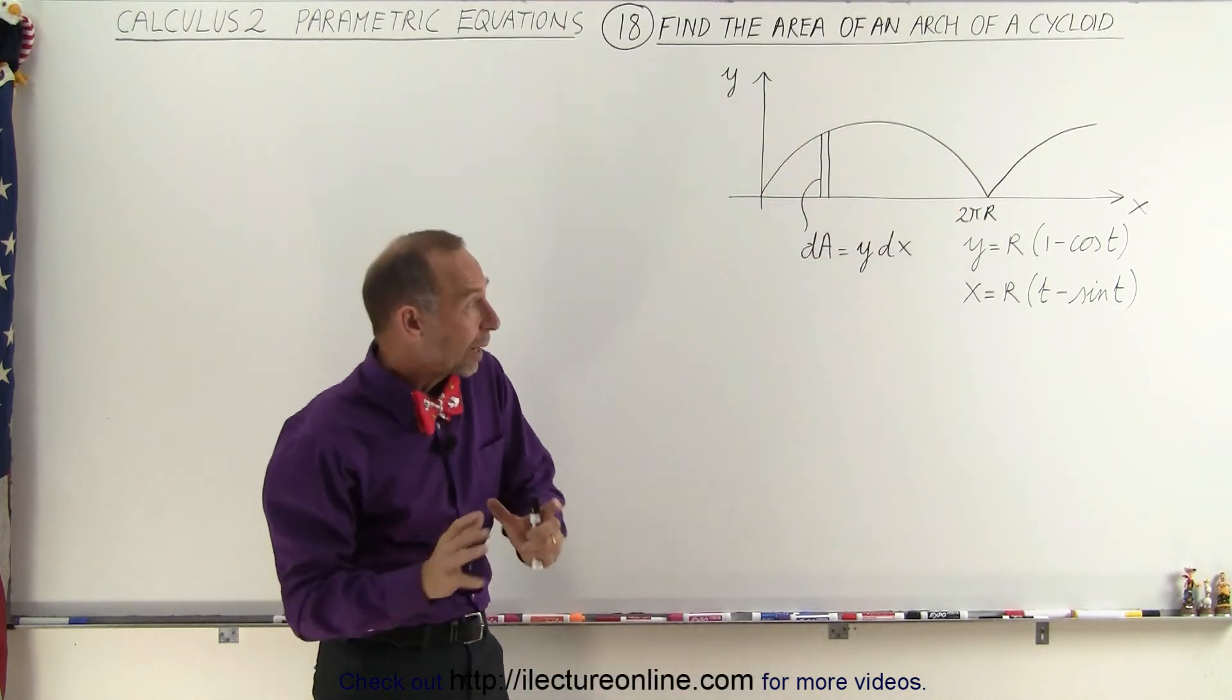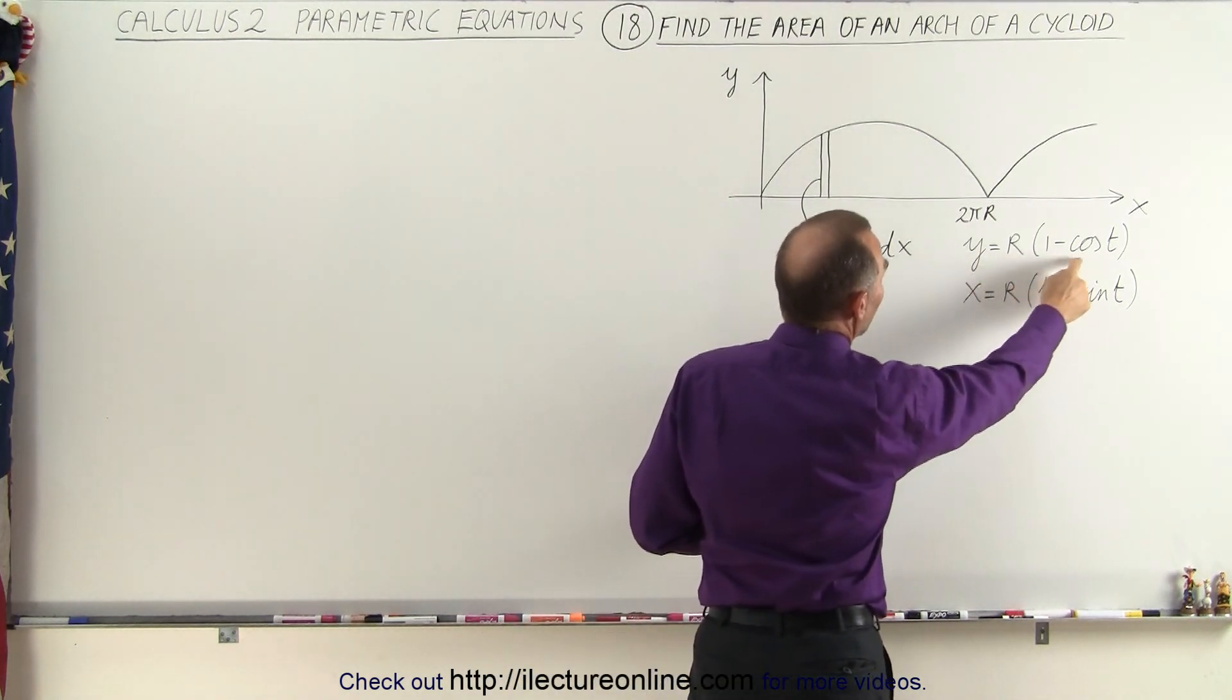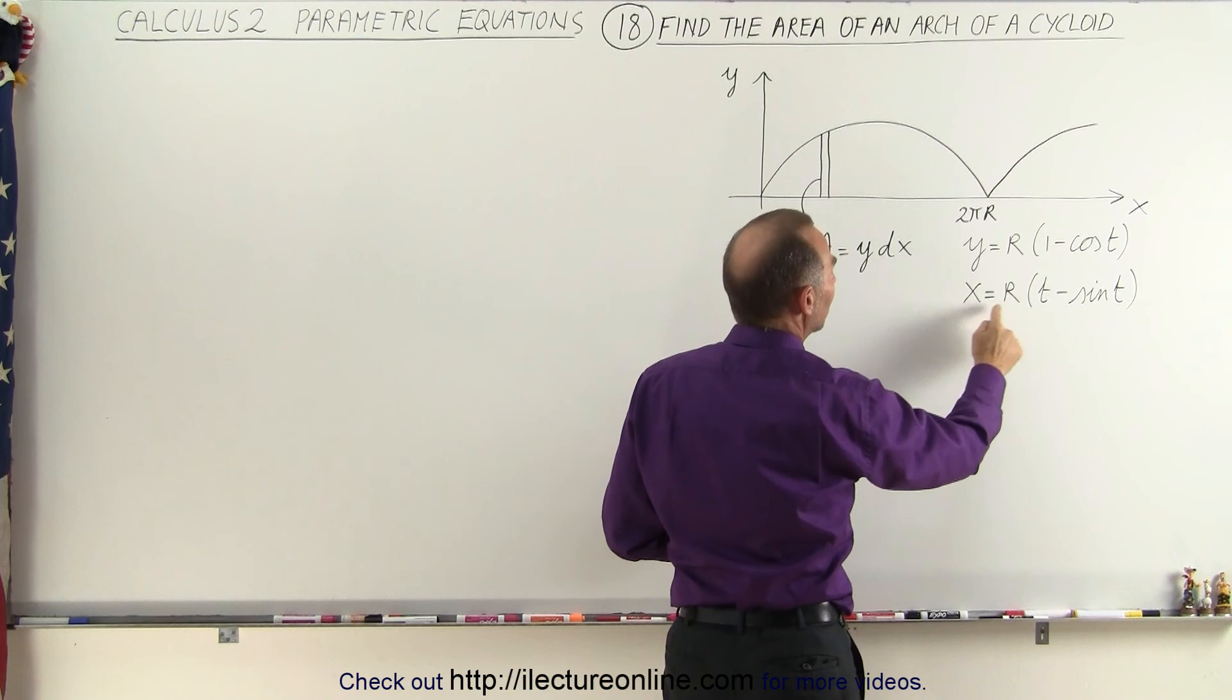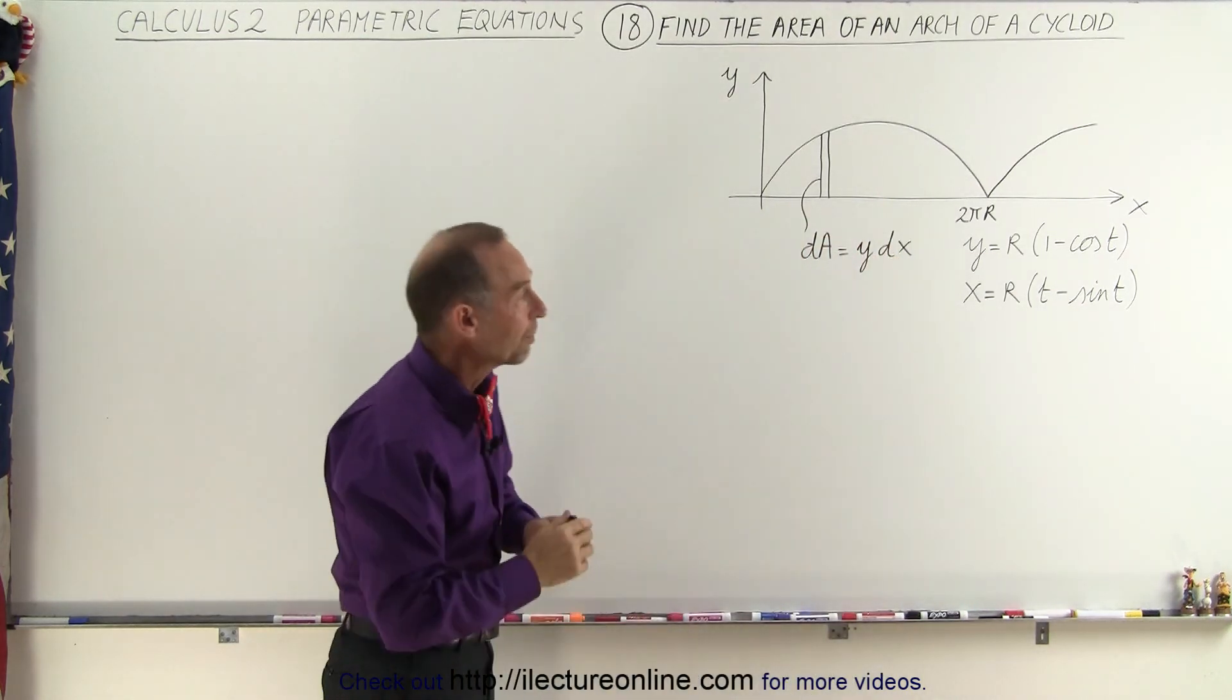Now the equations describing the cycloid are here: y is equal to r times 1 minus the cosine of t, and x equals r times t minus the sine of t. t of course is the parametric variable.